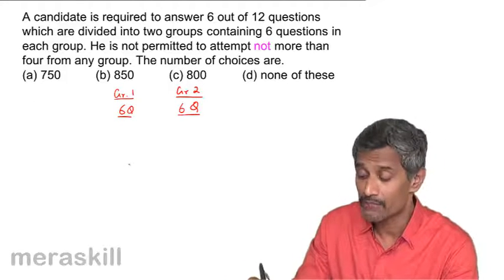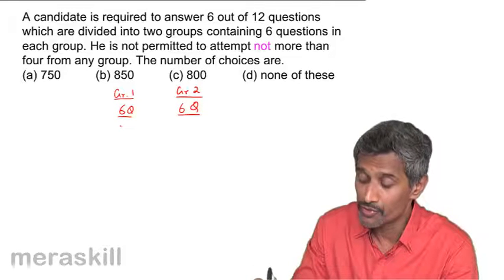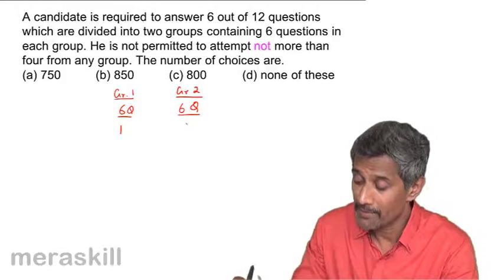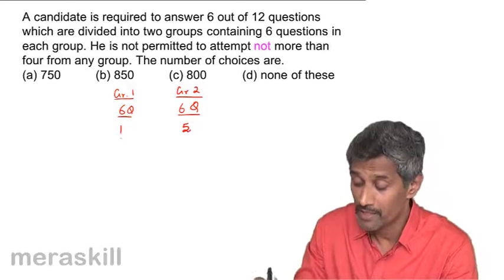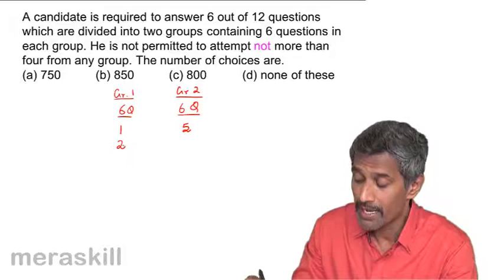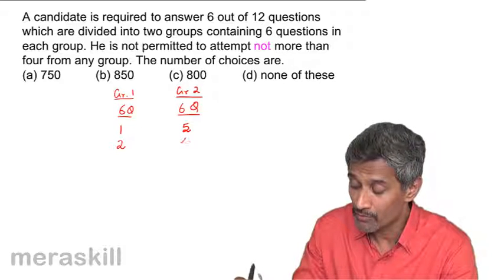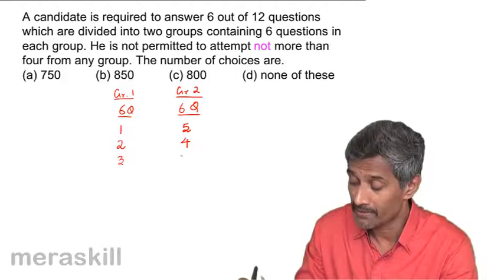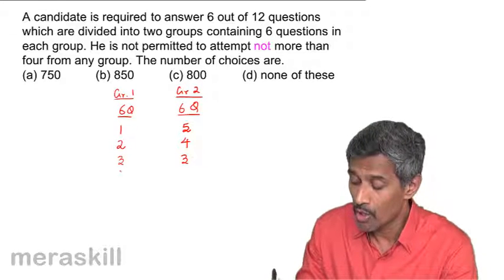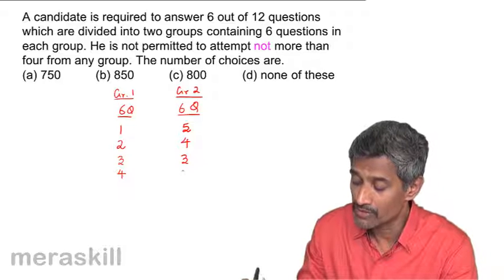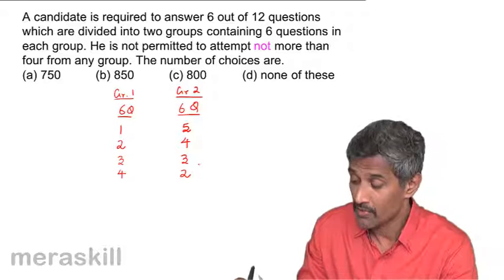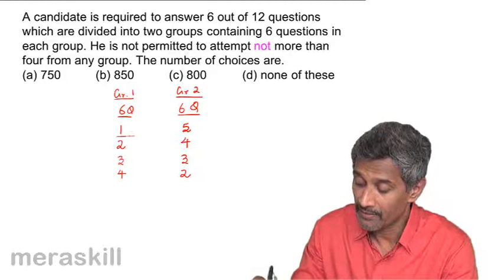So what are the various ways of choosing? He could choose two from one group and four from the other, or three from one group and three from the other, or four from one group and two from the other.